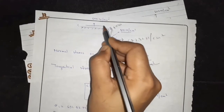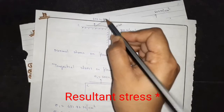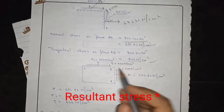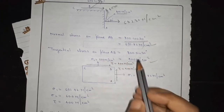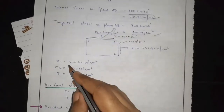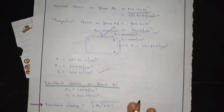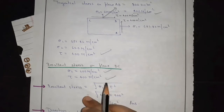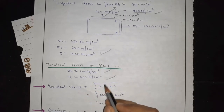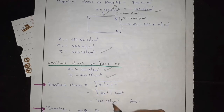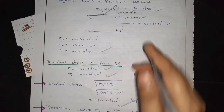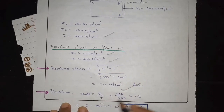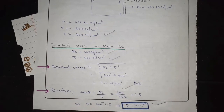If we find tau here, then we will find it here too. So we have one normal stress and one shear stress. The first part requires us to find the resultant stress on plane BC. We know sigma 2 is 600 N/cm² (given as normal stress on BC) and tau is 400. Using these values, we calculate the resultant stress on plane BC. For the direction, tan theta equals sigma 2 upon tau, which equals 1.5, giving a theta value of 56.3 degrees.